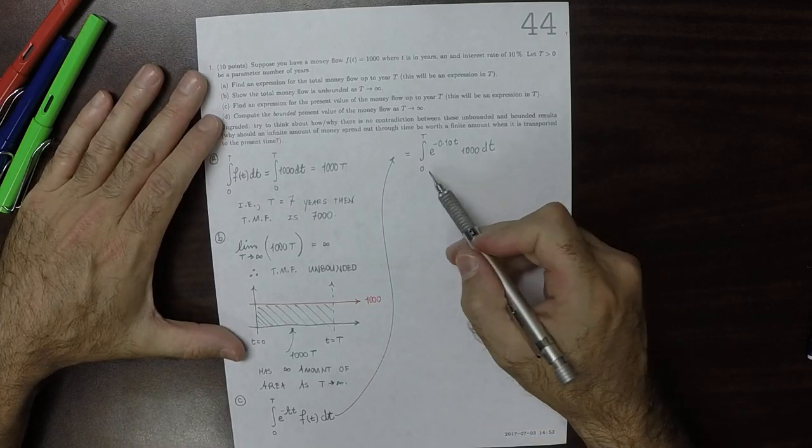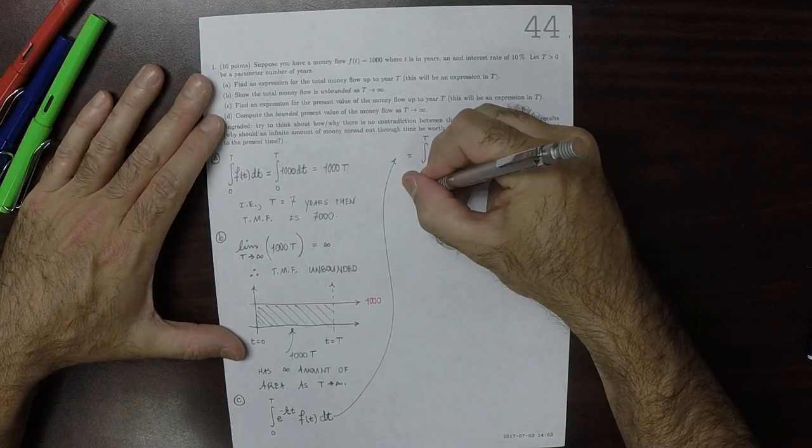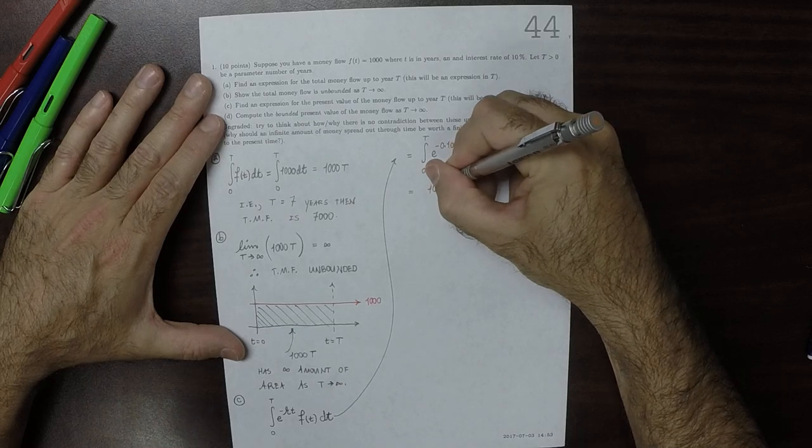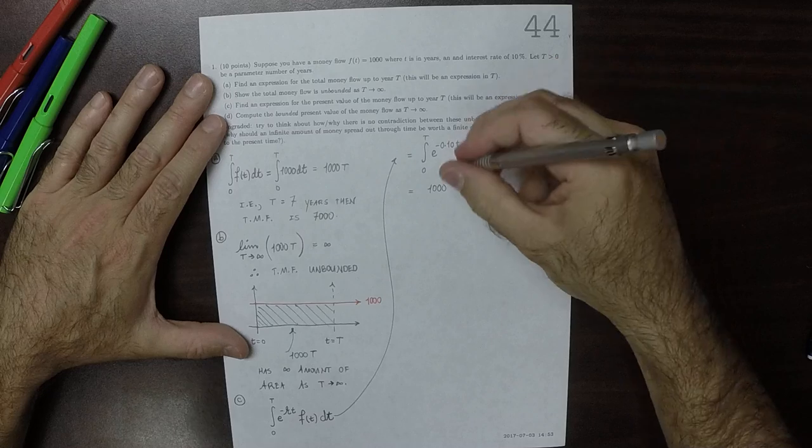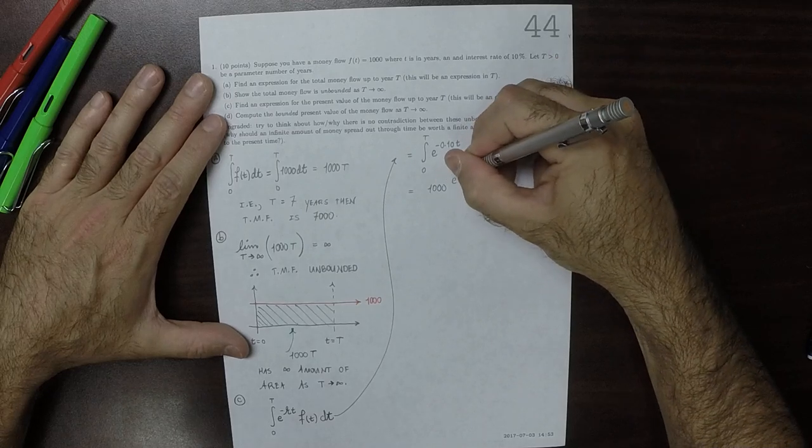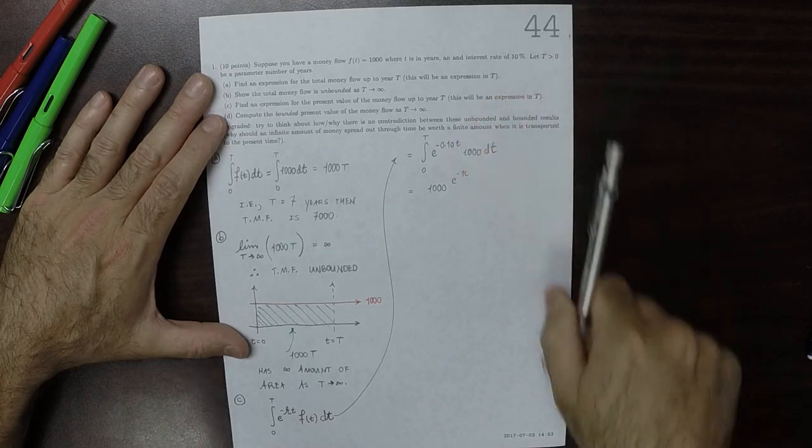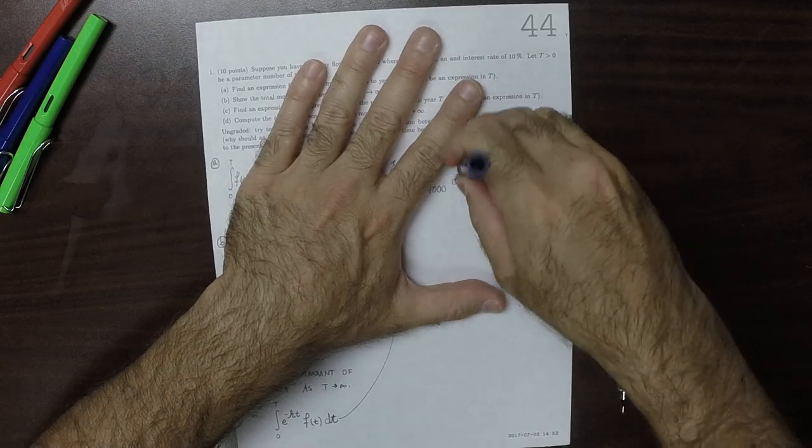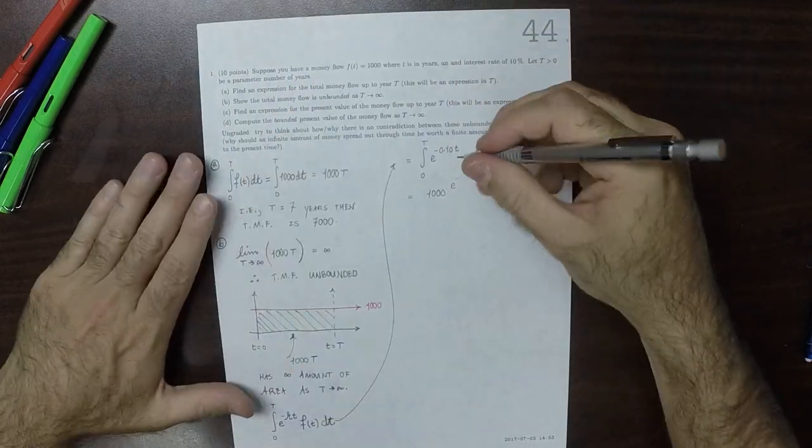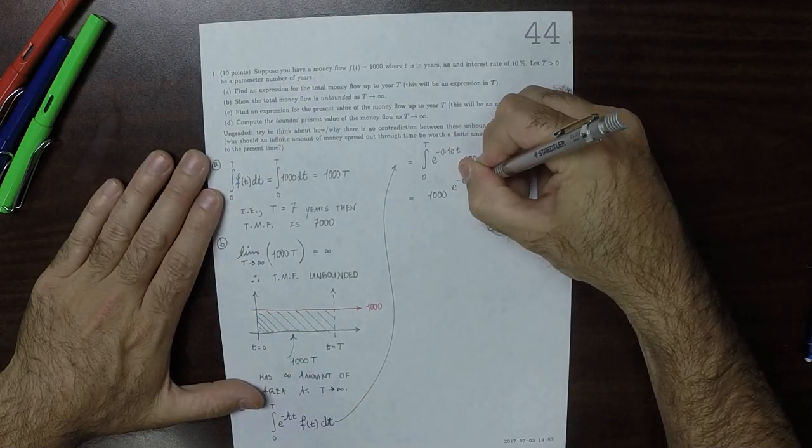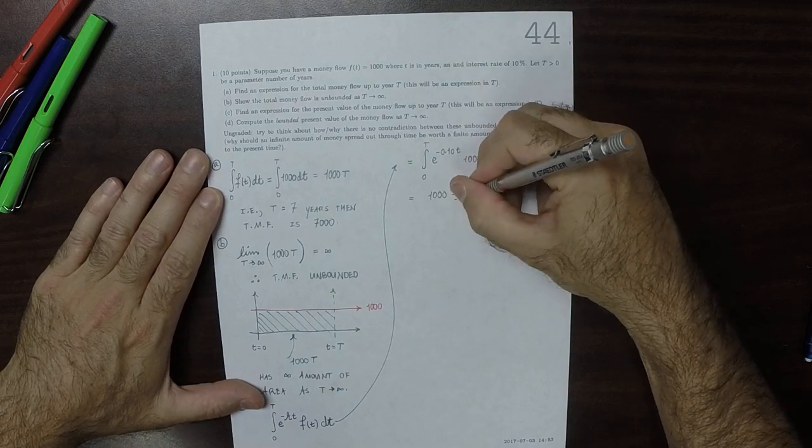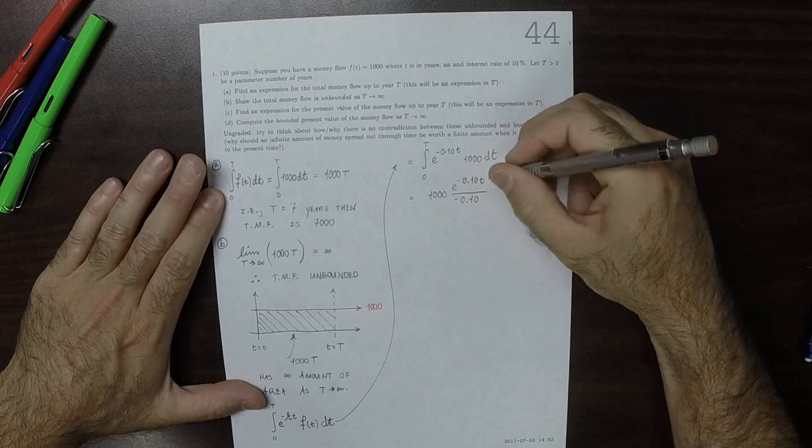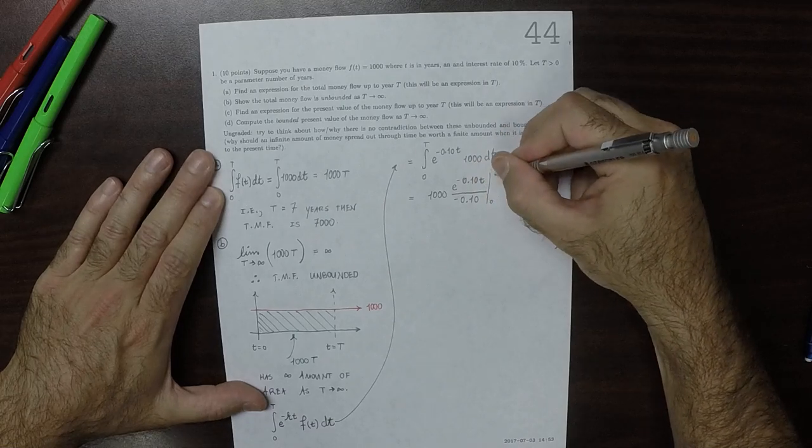Okay. Well, that 1,000 is just a constant, so it can be factored out. So that's 1,000. And then we can use the fundamental theorem for this. So that's exponential negative 0.10 t, and then divided by negative 0.10, and then from zero to big T.